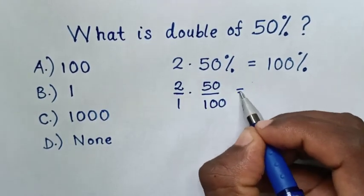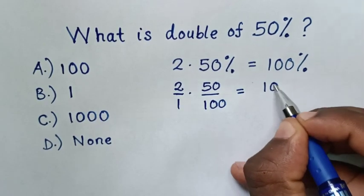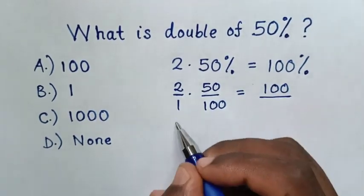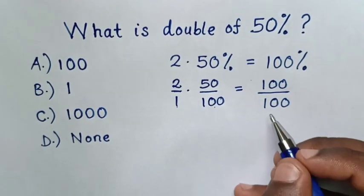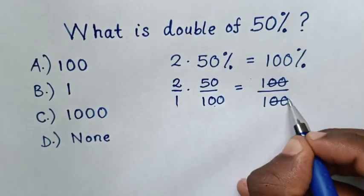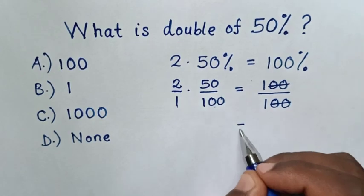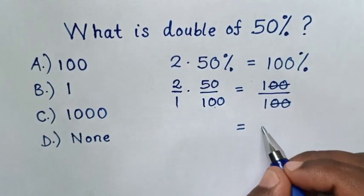Then this is equal to, this times this is 100, then over, this times this is 100. Then to simplify, this 2-0 will cancel with this 2-0. Then it is equal to 1 over 1, which is 1.